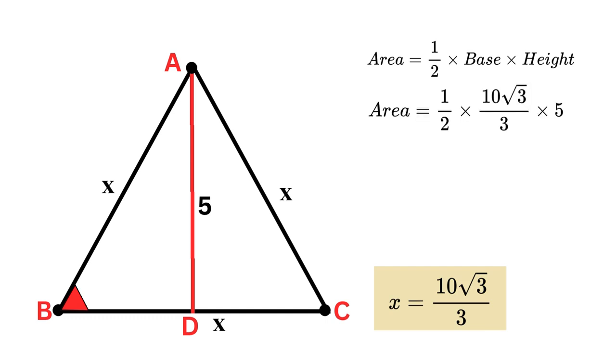Now put these values in the formula. Area equals 1 over 2 times 10 times square root of 3 over 3 times 5. By simplification, it equals 25 times square root of 3 over 3.